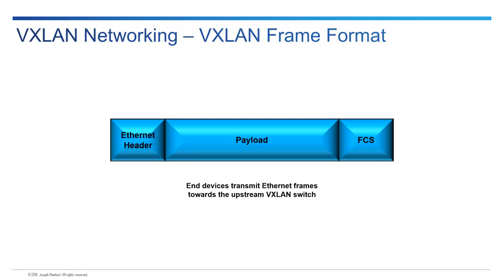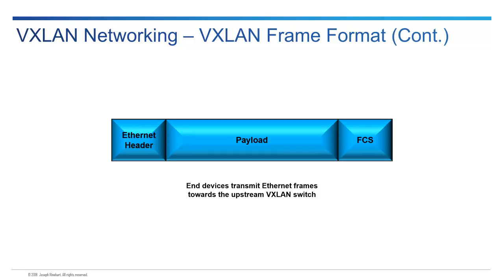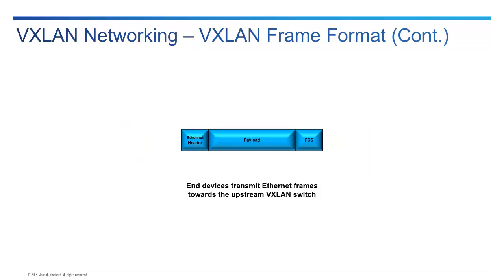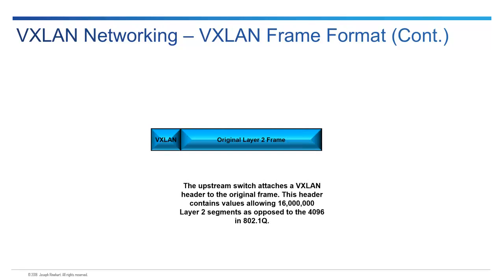VXLAN is doing the same exact thing — just in a different way. We start again with a Layer 2 frame being transmitted from a host up to a switch. When it reaches the switch, it's going to be encapsulated, just like 802.1Q trunks do. In VXLAN, rather than having an 802.1Q tag, you have a VXLAN header.